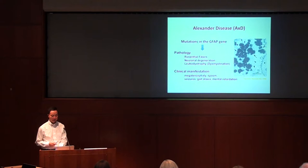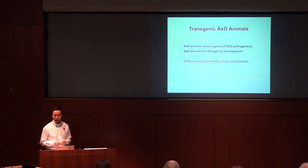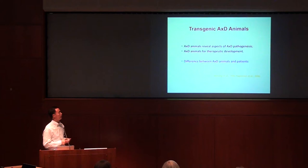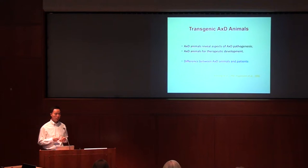You have also heard in the morning that there are many model systems — from fly, cells, mice and rats. And these animal models are really, really useful because they teach us a lot of information about how the mutation in this gene leads to the pathology and then leads to change in the brain. You have also heard that those models are useful for developing and testing therapeutics.